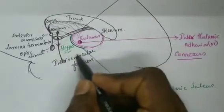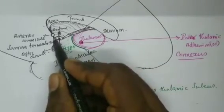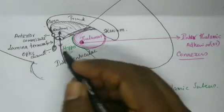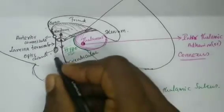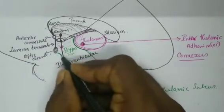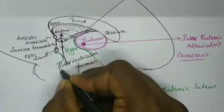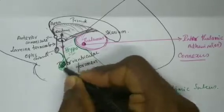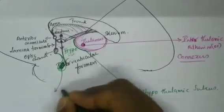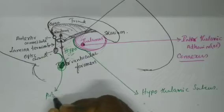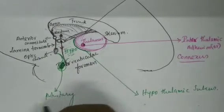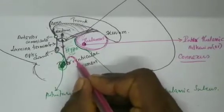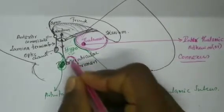The third ventricle is bounded anteriorly by the lamina terminalis, which is ending in the optic chiasma. Inferiorly the third ventricle is bounded by the pituitary gland.